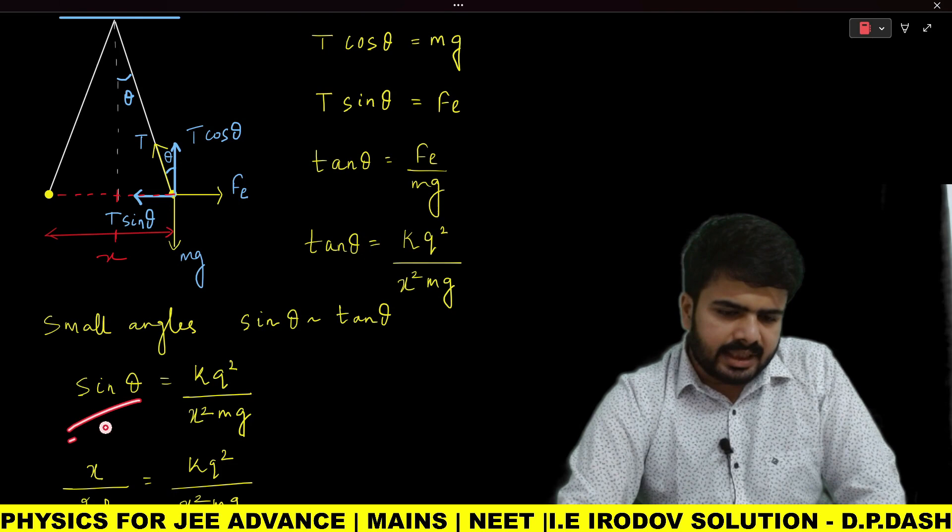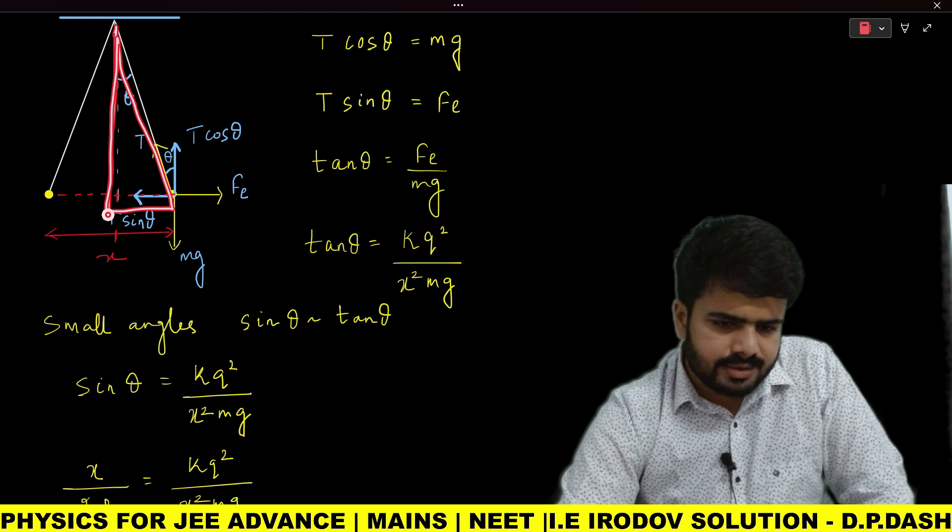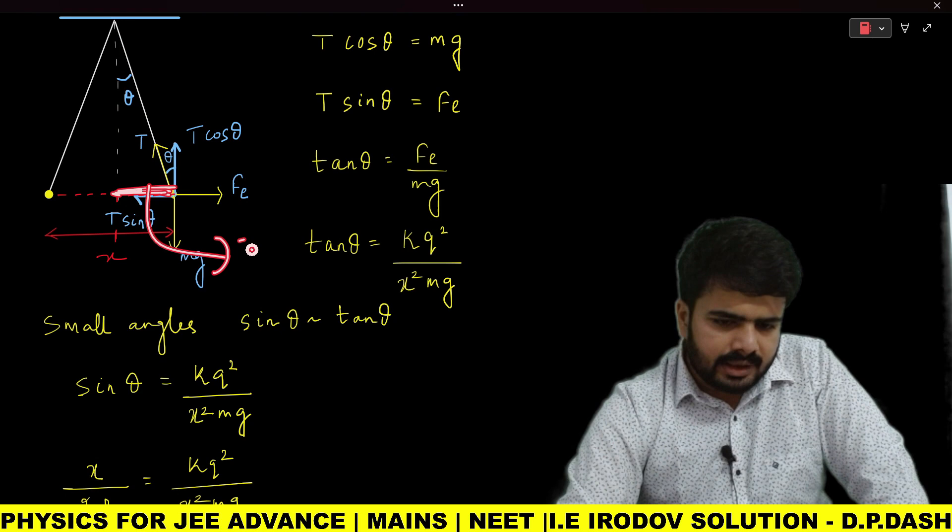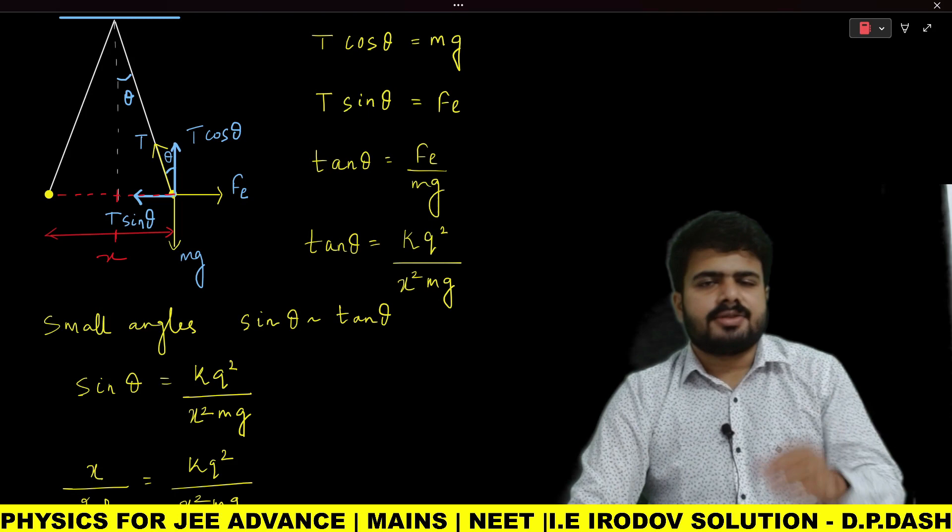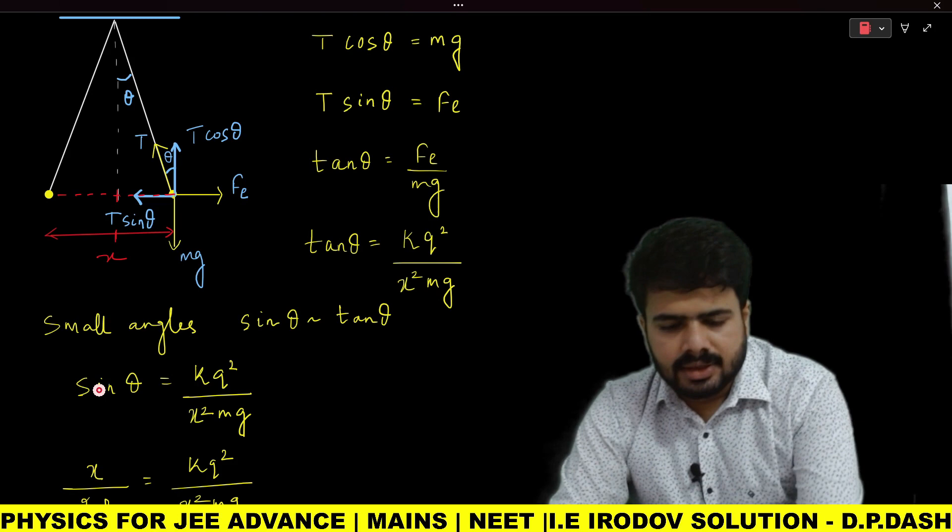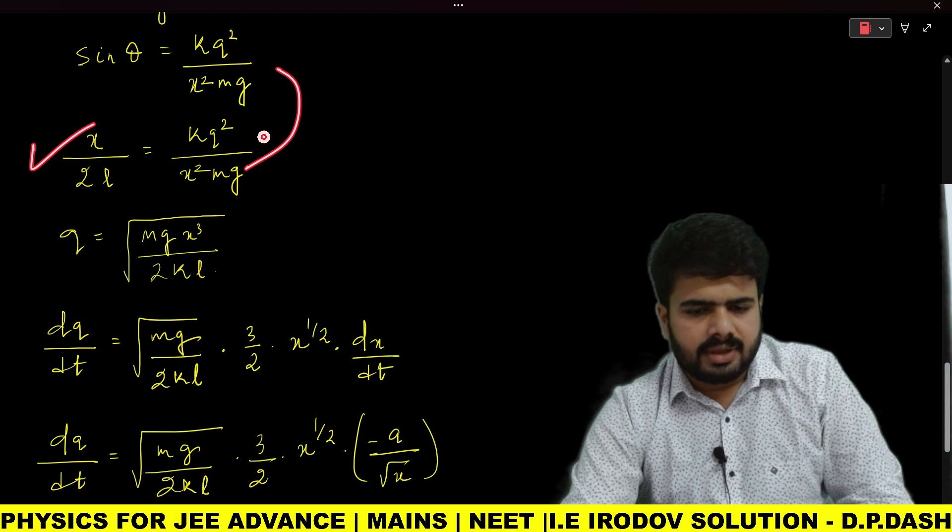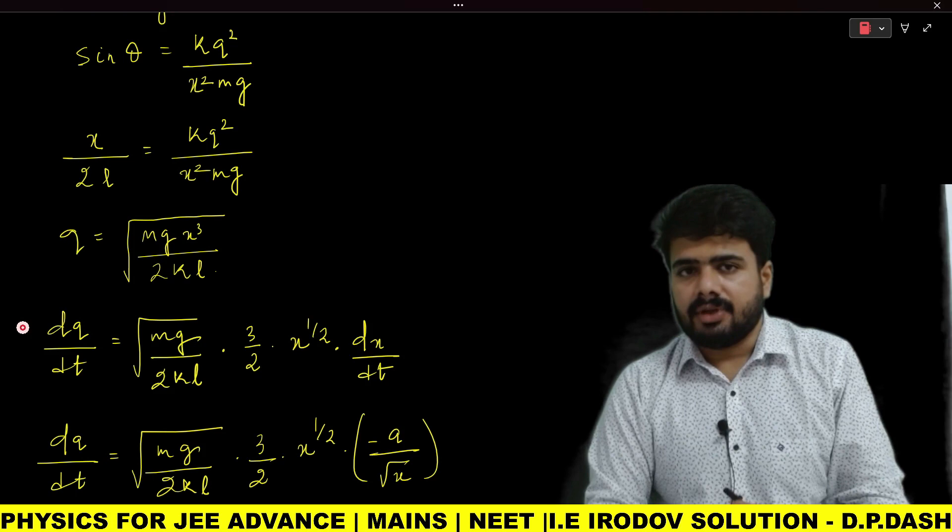Now in place of sin θ, look at this triangle. Here this length is x/2, and this length is l as given in the question. So sin θ = (x/2)/l = x/(2l). Further processing this, we get x/(2l) = kq²/(x²mg).